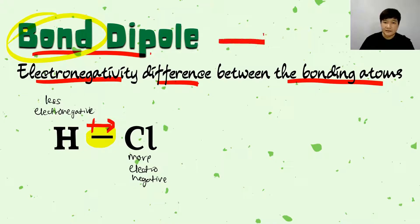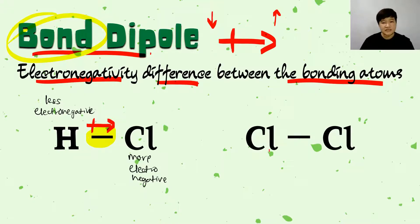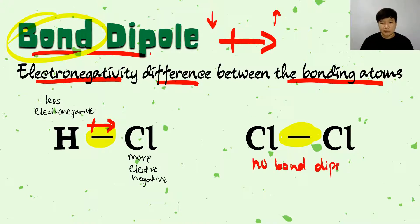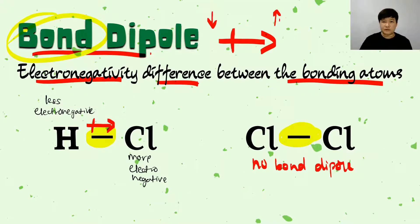This is the symbol we use to represent the bond dipole, and bear that in mind — we always move from lower electronegativity to higher electronegativity. If we have Cl-Cl, there will be no bond dipole, because the electronegativity is the same. When electronegativity is the same, the distribution is even, so there is no partial positive or partial negative, and therefore no bond dipole.